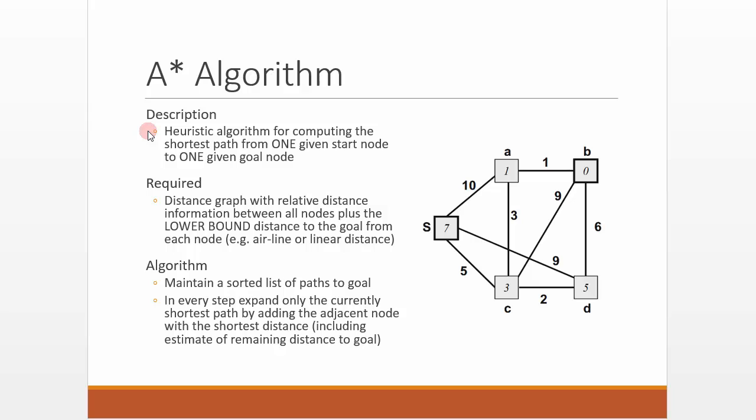We need a distance graph with relative distance information between all the nodes plus the lower bound distance to the goal from each node. This distance can be an airline, a linear distance or Euclidean distance coming from GPS.